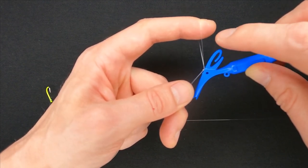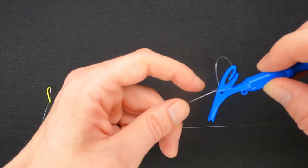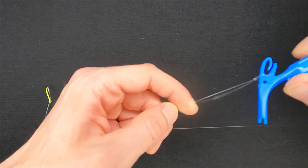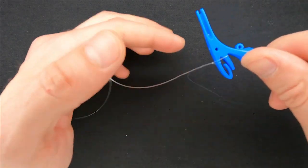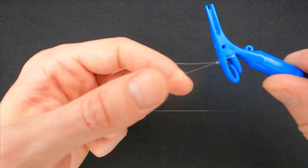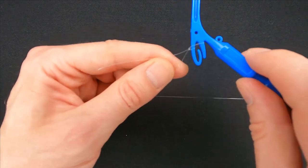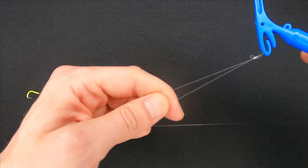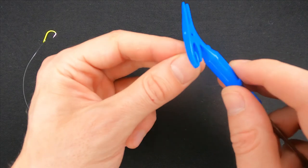The loop that you are holding with your index finger goes on to this top part of the knot tire. Pull the line to make the knot tight and remove the line from the bottom part of the knot tire. Pull the main line one more time and that is it.